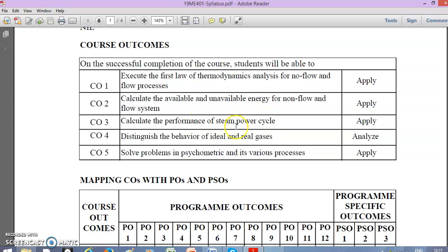Course outcome 4 is to distinguish the behavior of ideal and real gases. We're going to discuss the behavior changes between ideal and real gases. The Bloom's taxonomy level is analyze, which is the next higher level from apply. So you'll get an analyze level question in this subject.